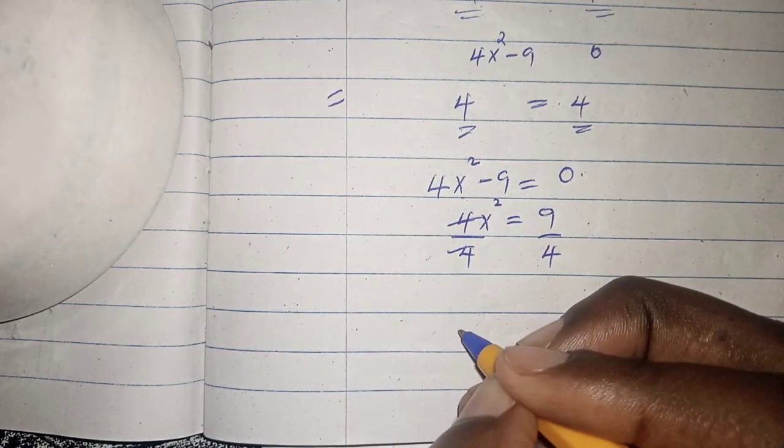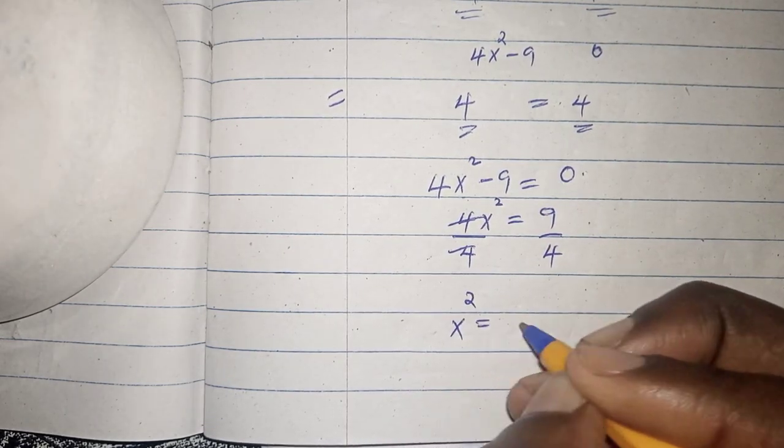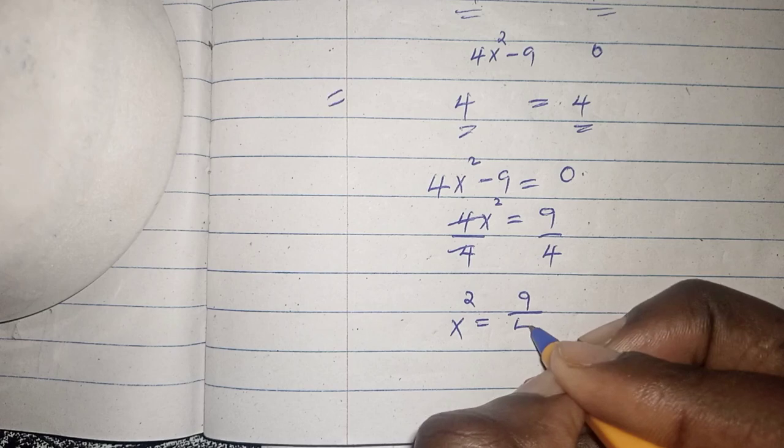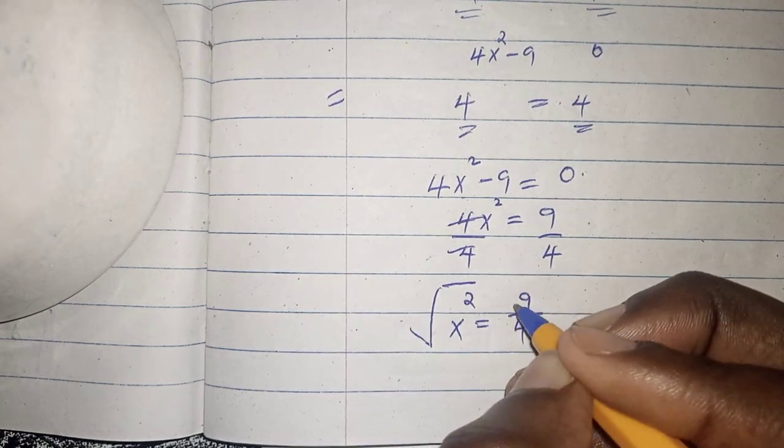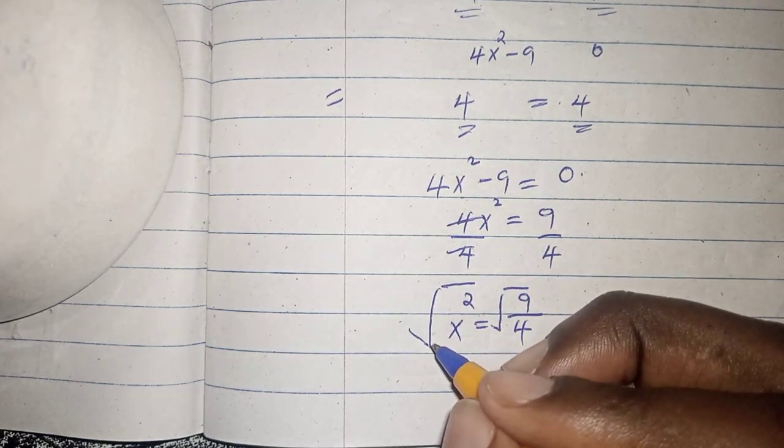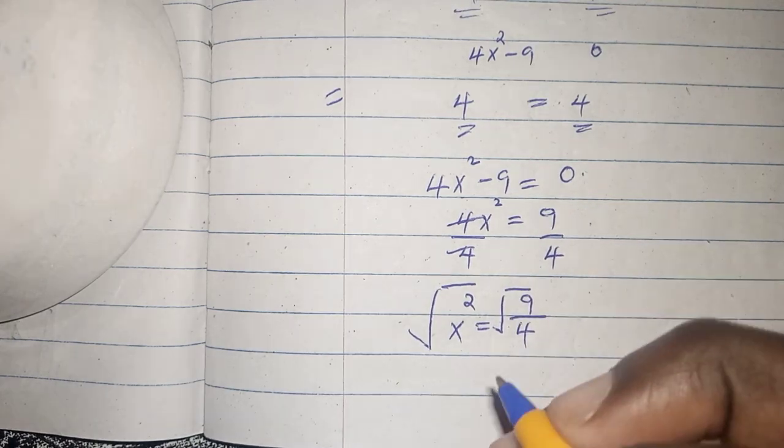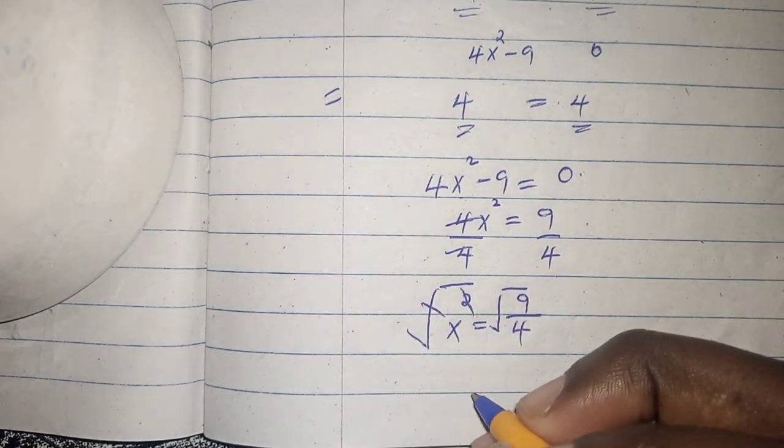So this and this will cancel. x squared equals 9 over 4. So we shall square root this side and square root this side to get the value of x. So this square will cancel with the square root.